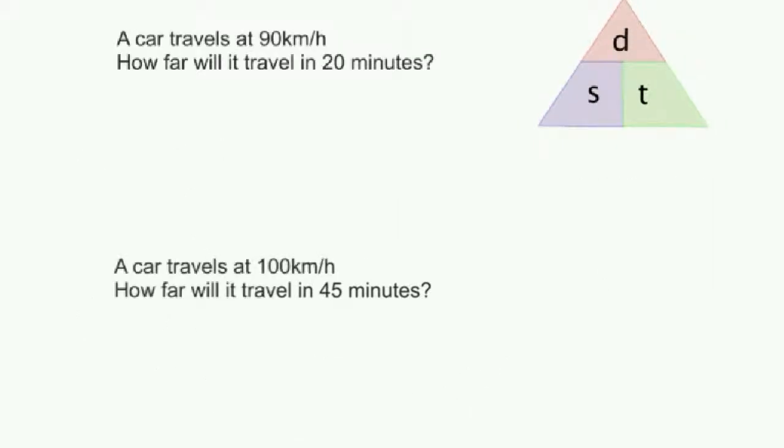The only slight thing you need to be careful of is watching what units everything is in. You need to make sure that your units are the same throughout. So just have a look here. In this problem, we've got a car travelling at 90 kilometers per hour. But then they go and ask us, how far is it going to travel in 20 minutes? In other words, we've got minutes here and hours in the speed. Not a big issue. All we have to do is make it all the same. And so what we've got to do is turn 20 minutes into an amount in hours.